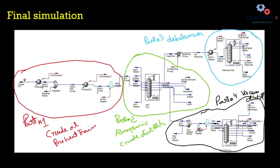This is the final simulation in the series. We have already simulated Part 1, which was related to the crude oil preheat train; Part 2 was the atmospheric crude distillation; Part 3 was the debutanizer to stabilize light naphtha. Today we are going to simulate the atmospheric residue to produce these fractions.